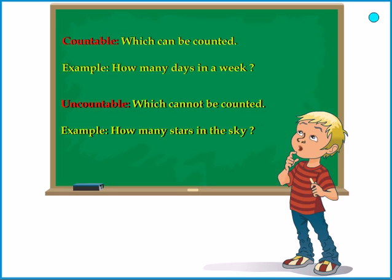Countable: which can be counted. Example: How many days in a week? Uncountable: which cannot be counted. Example: How many stars in the sky?